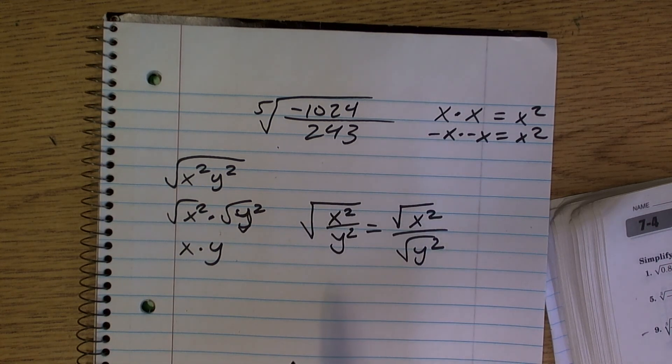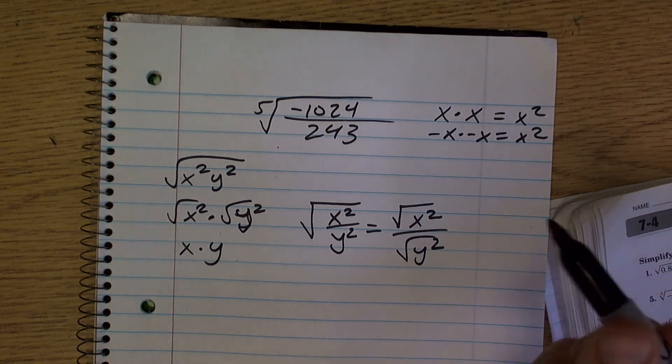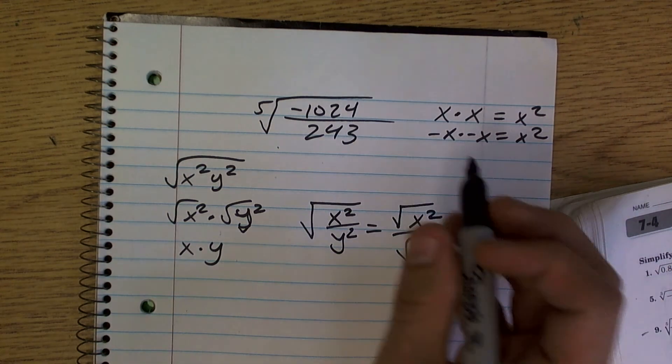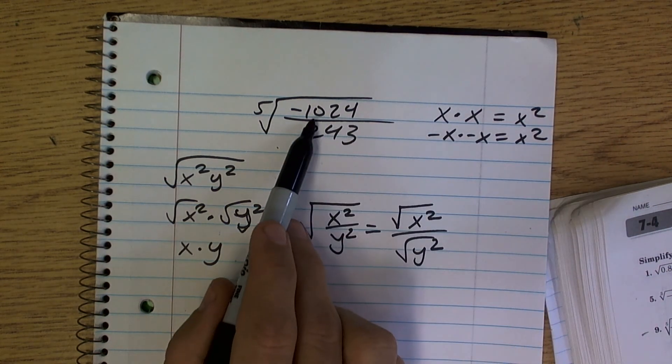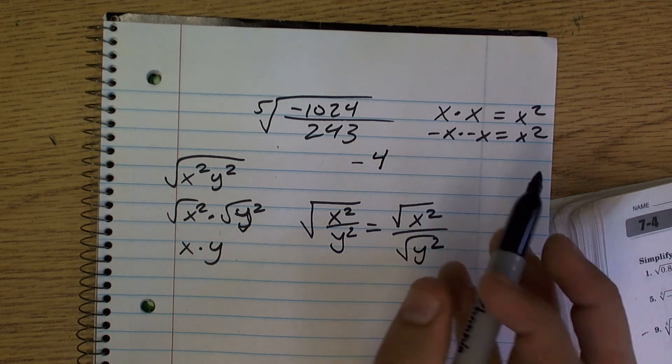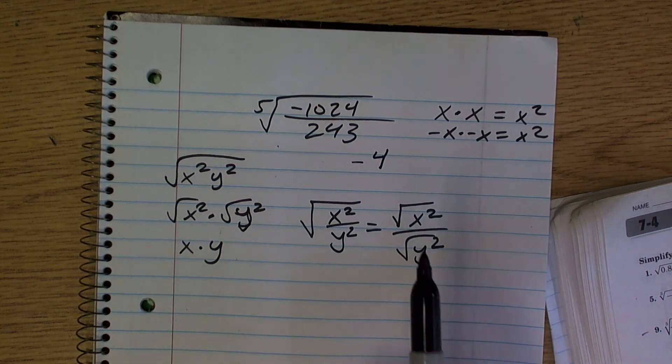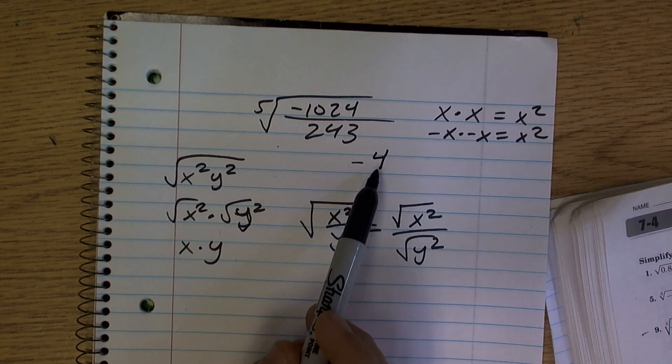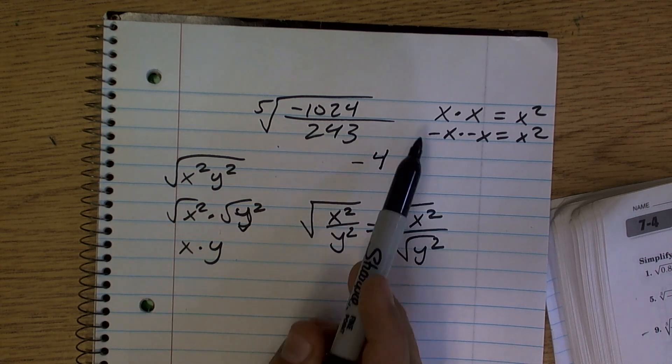So if I'm going to take the fifth root of negative 1,024, that's going to give me a negative number. I'll have negative 4. What number multiplied by itself five times gives me negative 1,024? That's negative 4.